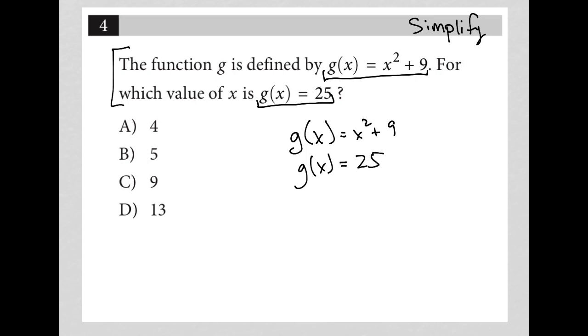So, if this was all I had, I would definitely simplify by substitution and say, well, if you tell me here that G of x is equal to 25, that means up here I could just cross out the G of x and replace it with 25, which means I'd have a new equation that says 25 equals x squared plus 9.